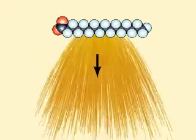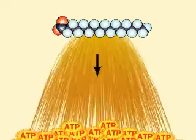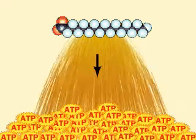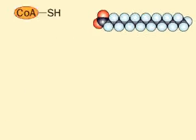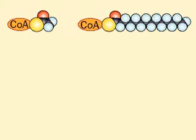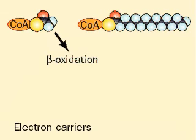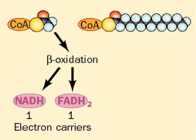Breakdown of a 16-carbon palmitate molecule yields a remarkable amount of ATP. Let's see how it happens. Each beta-oxidation, the removal of a 2-carbon unit, yields two reduced electron carriers, NADH and FADH2, plus one molecule of acetyl-CoA.